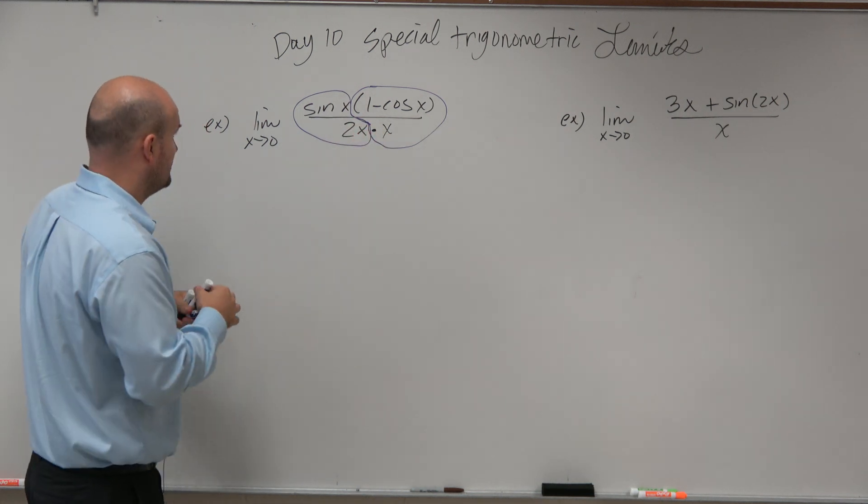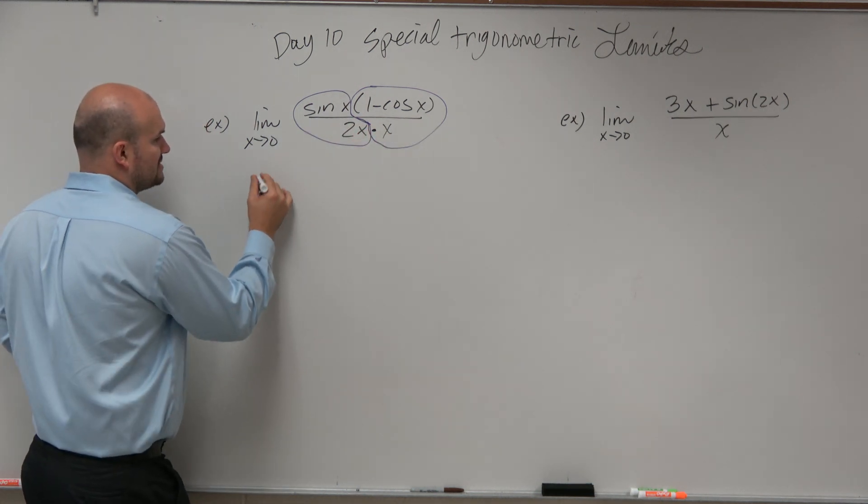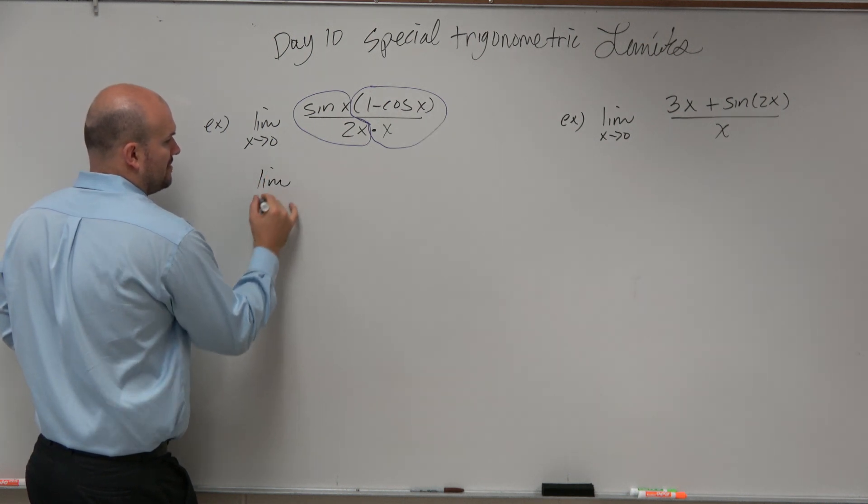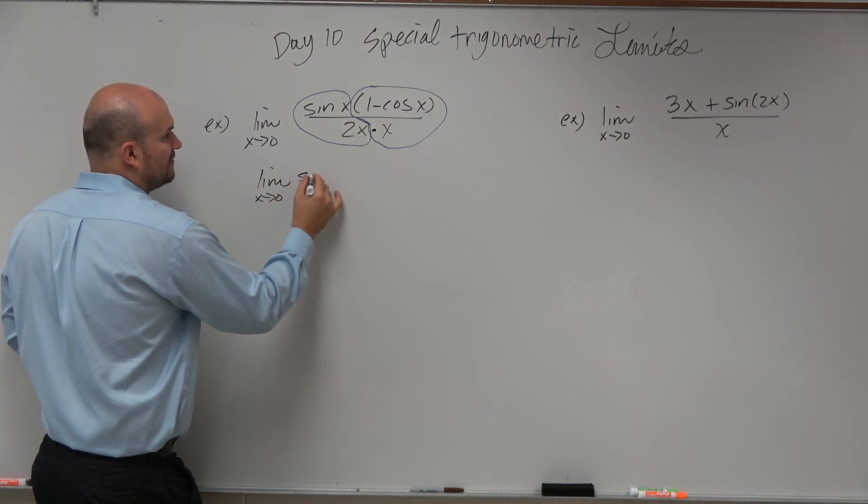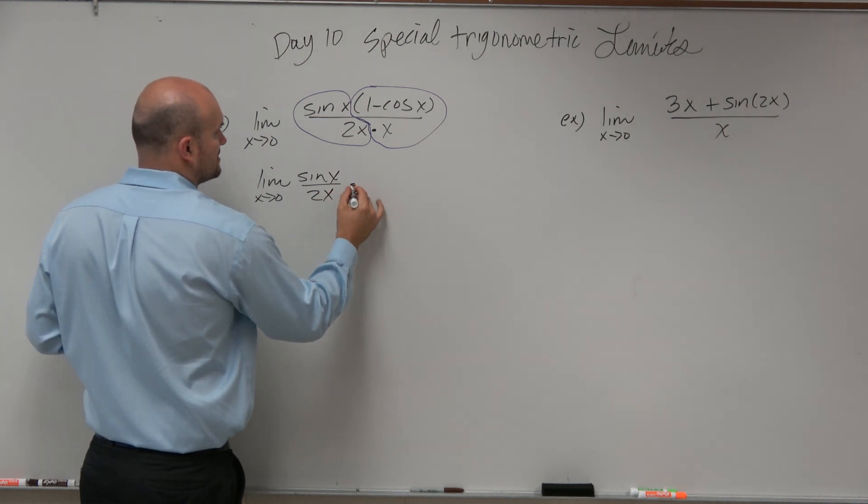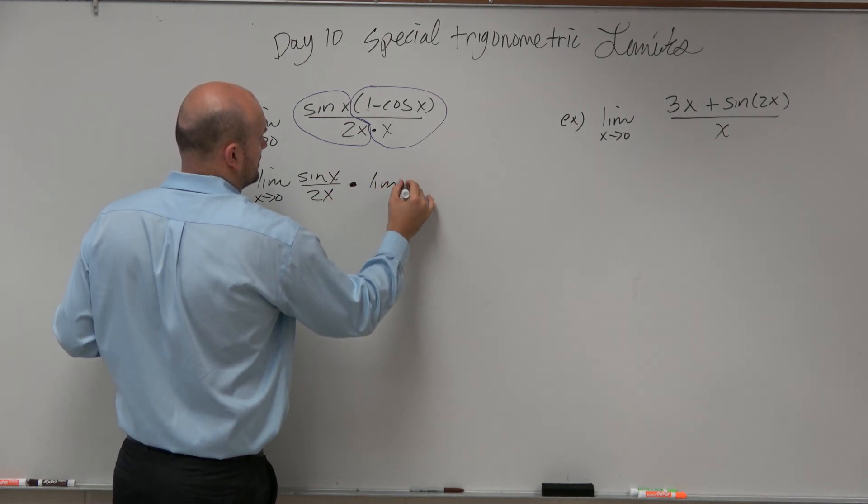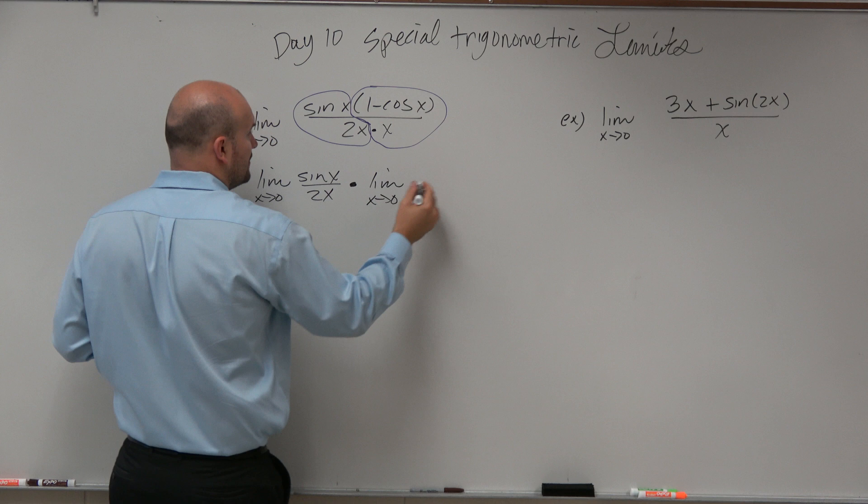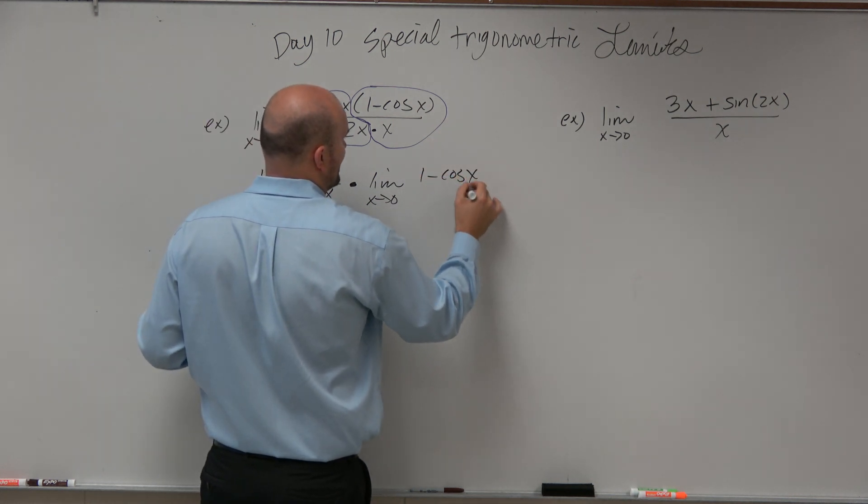So now what I'm going to do is I'm going to rewrite this as, basically, the limit as x approaches 0 of sine of x over 2x times the limit as x approaches 0 of 1 minus cosine of x over x.